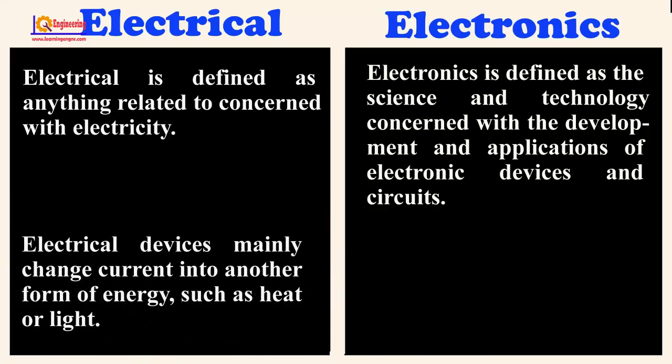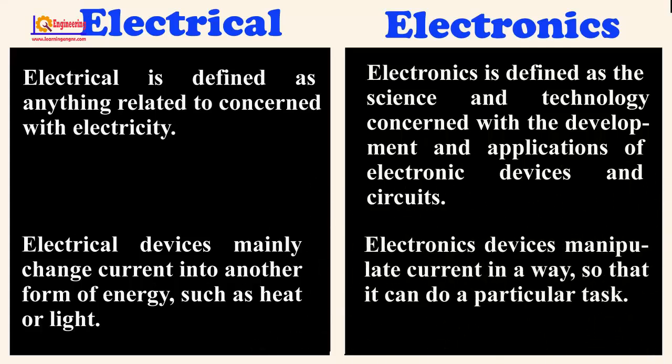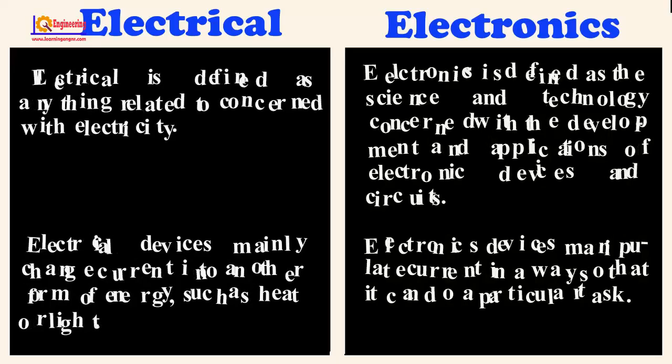Electrical devices mainly change current into another form of energy, such as heat or light. Electronics devices manipulate current in a way so that it can perform a particular task.